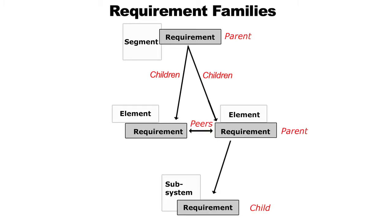When you do that decomposition, when you go from one level to the next level, there's a relationship called parents and children. The higher level is the parent, and when you take that requirement and decompose it or send it down to the next level — like the lunar module — you have requirements on the whole lunar module element. When you break that down into just the requirements for the docking system or the docking radar, all of those requirements need to be tied to the ones above them. That's the parent-child relationship.